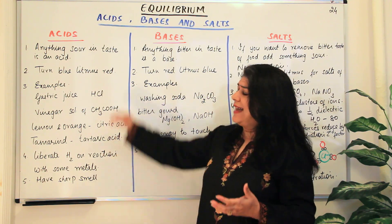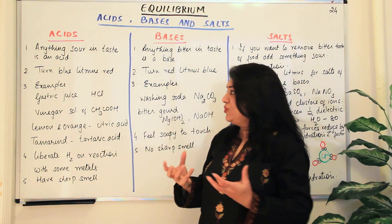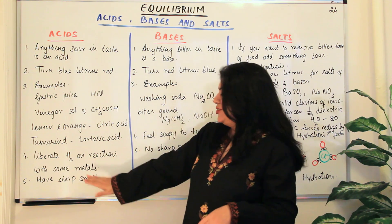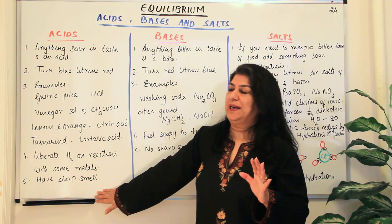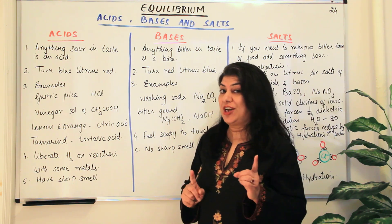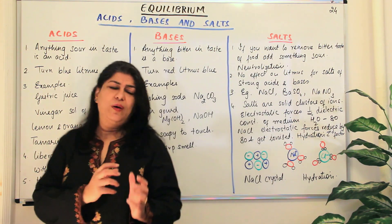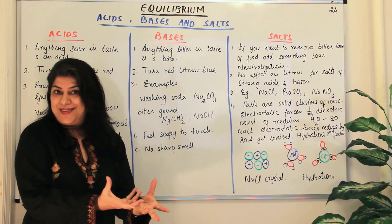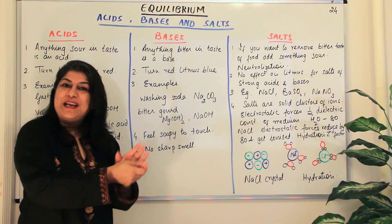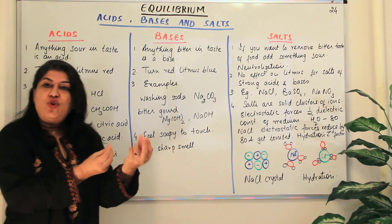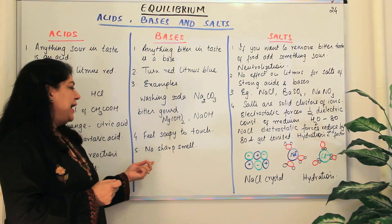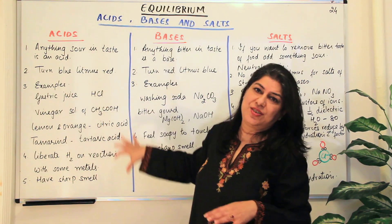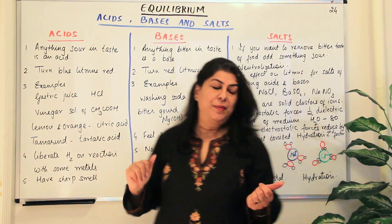Acids are sour in taste, and if you've ever smelled vinegar it has a pungent, sharp odor. Acids usually have that sharp smell, whereas bases do not. A couple more properties of bases: bases are usually slippery and soapy to touch. Soaps are bases — notice how soap feels slippery in your hand. That slippery, soapy feel is due to a base, and bases usually do not have a sharp smell. These are a few physical differences between acids and bases, and one chemical difference.